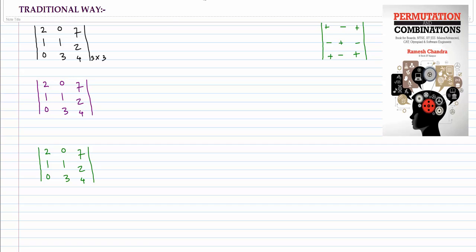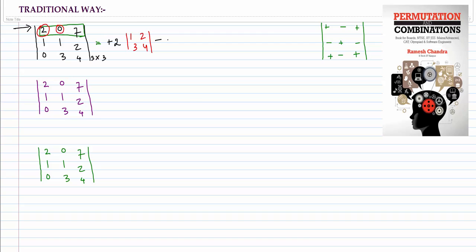Let's start with the first determinant by using the first row. The elements in the first row are 2, 0, and 7. The position of 2 is plus, so we write plus 2. Since 2 is the element at position (1,1), we omit the first row and first column; the remaining sub-determinant is |1 2; 3 4|. Then minus 0, since 0 is in the first row, second column.